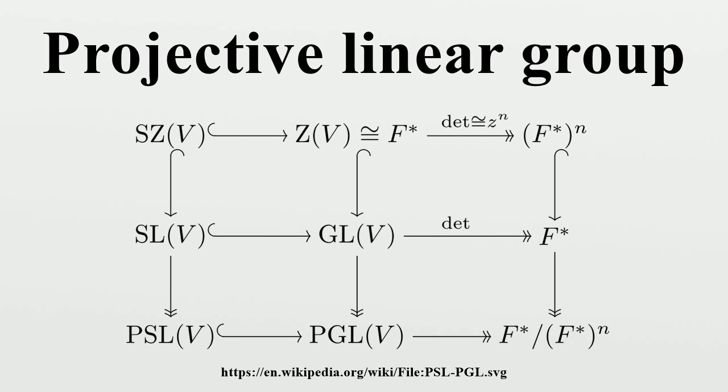As an example, note that PGL_2(C) equals PSL_2(C), but PGL_2(R) is greater than PSL_2(R). This corresponds to the real projective line being orientable, and the projective special linear group only being the orientation-preserving transformations.